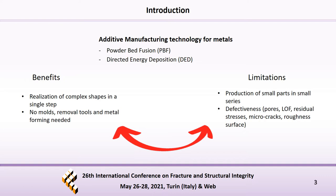Additive manufacturing is a new technology that quickly received worldwide attention because it has great strengths. According to ASTM, the AM processes for metals are divided into two categories: powder bed fusion and directed energy deposition. Both have important benefits, but there are also some limits. In particular, there are different defects that need to be controlled during the printing phase.